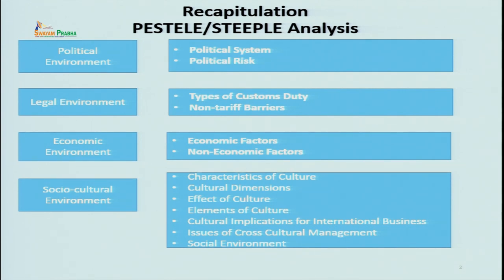Let us quickly recap what we started in the past lecture. First, we talked about the political environment, where we figured out the political systems of different nations. We also tried to figure out various political risks which a particular MNC might face, and what different strategies an international business has to frame keeping those political risks in mind. Second, we talked about the legal environment, figuring out the various custom duties prevailing in different nations, their charges, and how a particular investor can benefit by investing in special economic zones, free trade zones, or export processing zones. We also covered non-tariff barriers.